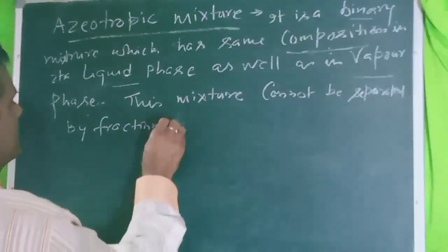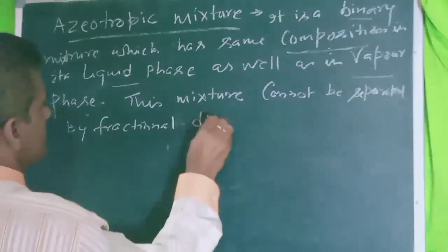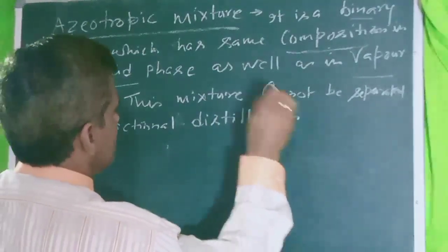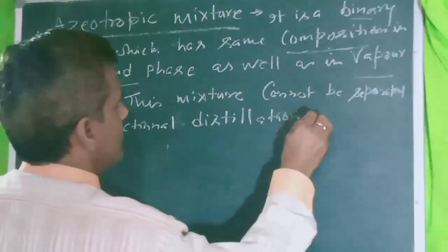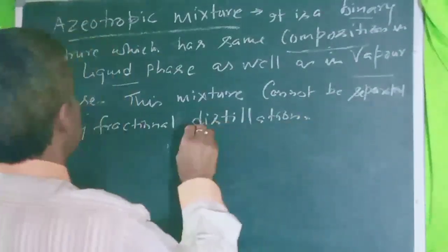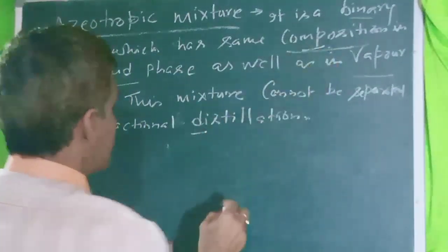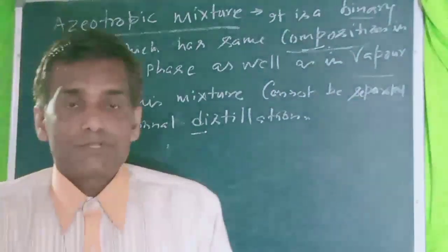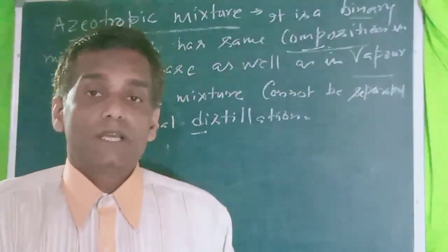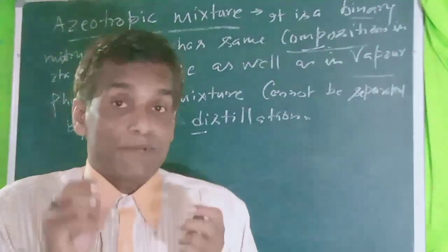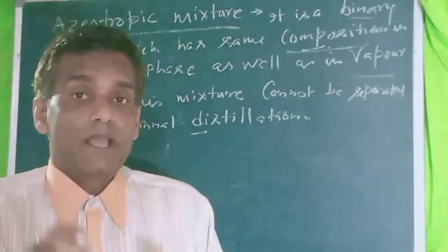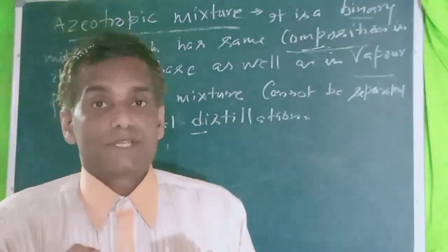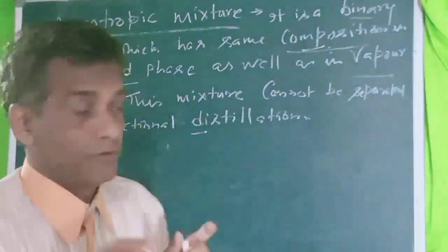It cannot be separated by fractional distillation. This is the constant composition. It boils at constant temperature — temperature plays an important role here. At constant temperature, it produces constant composition.